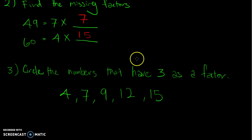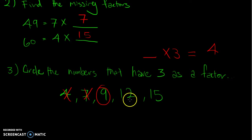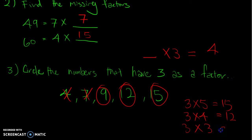Lastly, 'circle the numbers that have 3 as a factor': can anything times 3 give 4? No. Give 7? No. Give 9? Yes — circle it. Give 12? Yes — circle it. Give 15? Yes, because 3 × 5 = 15 — circle it. So 3 is a factor of 9, 12, and 15.